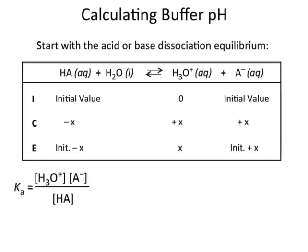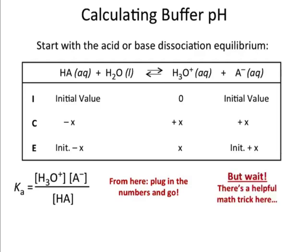Then you'd plug this into Ka, just like we've done before. And that would work, and you'd get x, and that'd be the concentration of H3O+, and you'd get the correct answer. But we have a simpler way to do this, called the Henderson-Hasselbalch equation. So let me explain what that is.